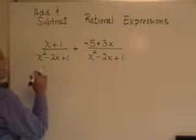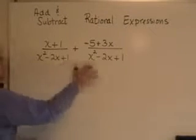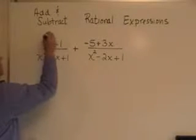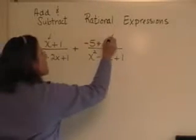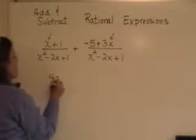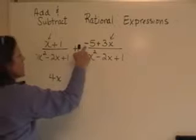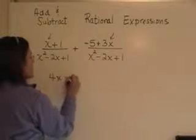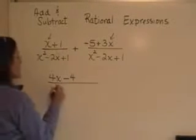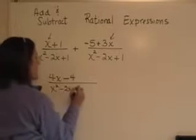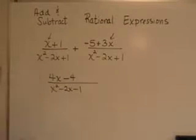And so what I need to do is combine like terms in the numerators. The denominators stay the same because I have their common denominator. So this 1x and this 3x adds to be 4x, and this positive 1 and minus 5 adds to be a minus 4, over the common denominator of x squared minus 2x plus 1.